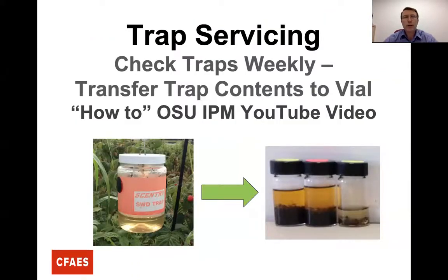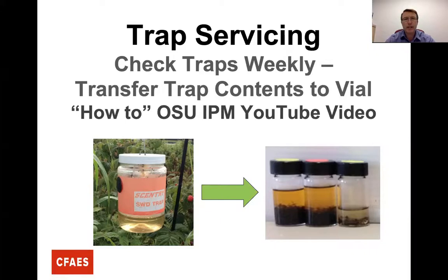We're going to run through how to get the contents from the trap that's been out in the field for a week over into the vials — that's what you'll be shipping to us. There are a lot of things that can be attracted to these traps. Even though we're looking for spotted wing drosophila, there can be lots of other drosophila-type or vinegar flies, beetles, spiders, moths, wasps — all kinds of stuff. Just because something is in the trap does not mean it's a spotted wing drosophila, so let us do the identification.